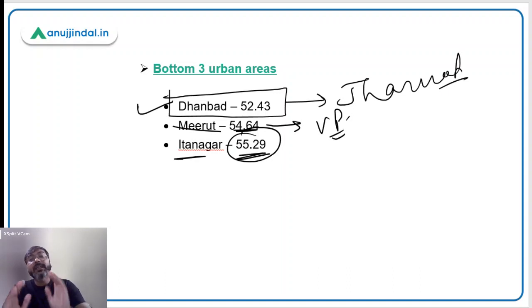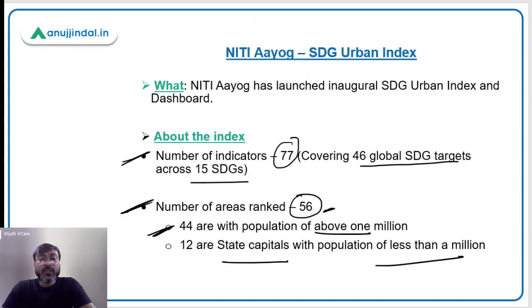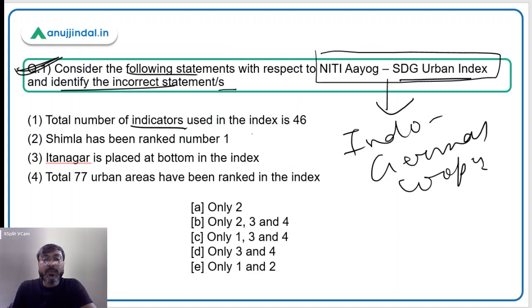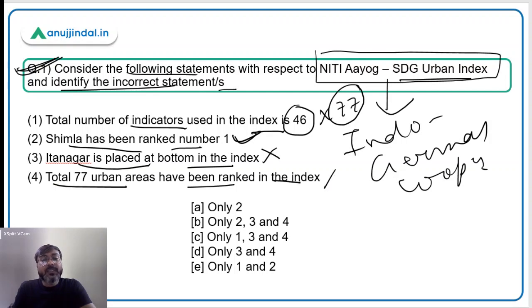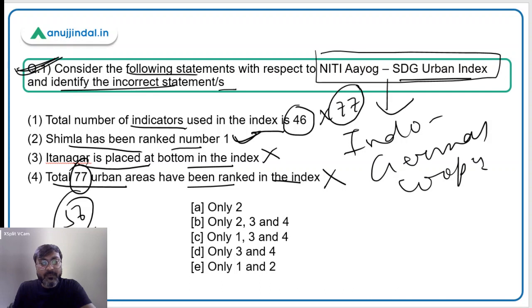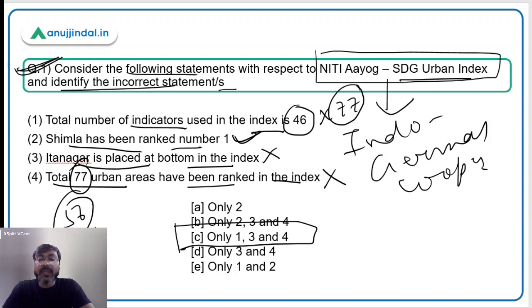There is no need to go into further details; questions will come from this much information only. Coming back to the question: the total number of indicators used in the index is 46 — this is incorrect, total indicators are 77. Shimla ranked number one — correct. Itanagar placed at the bottom — incorrect. Total 77 urban areas ranked — also incorrect, it is 56. Therefore, statements 1, 3, and 4 are incorrect, making Option C the correct answer.